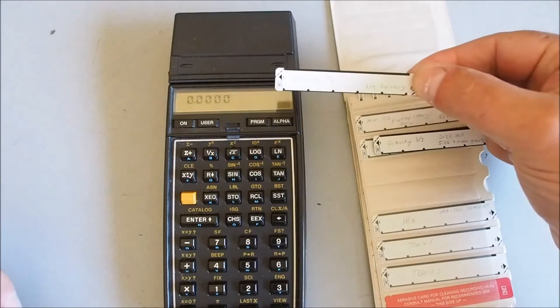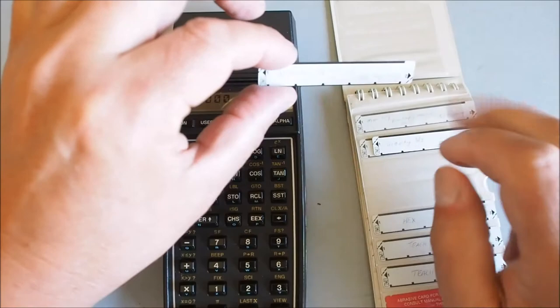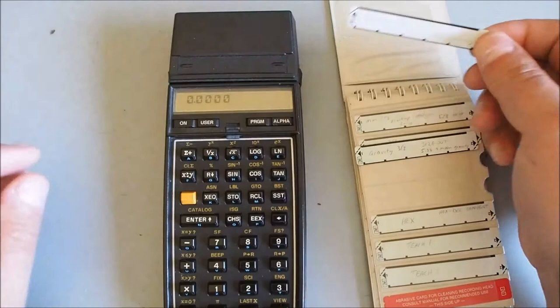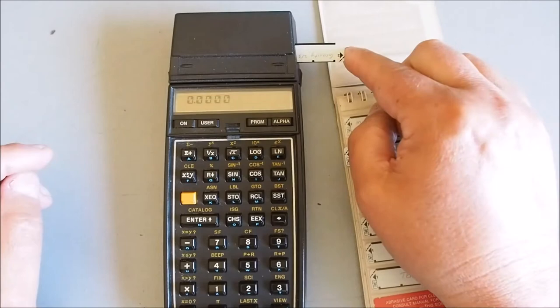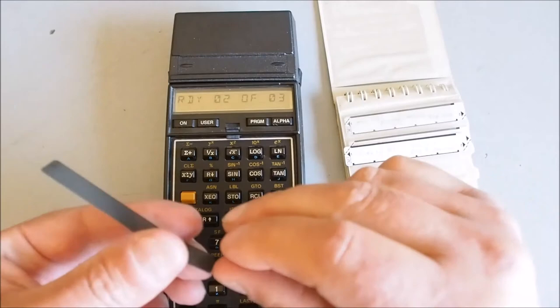I'm going to feed this gravity through. This gravity takes three sides so side one, side two, and then on this second card I've got side three. It's just sitting at the prompt there and you see on the screen ready two of three, so it's asking for side two of three.